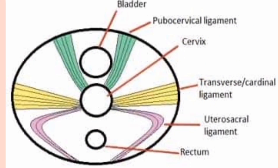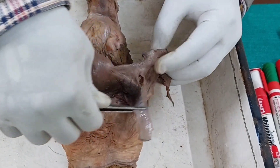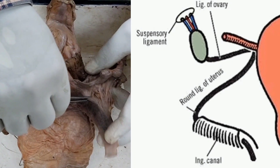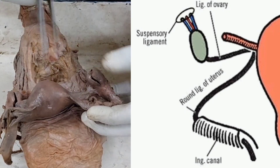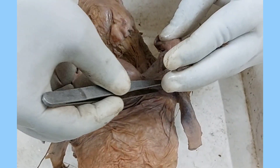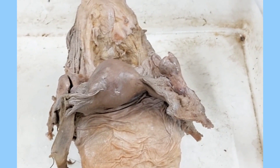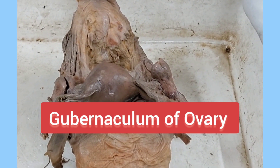The true ligaments are formed by condensation of the pelvic fascia along with some connective tissue and smooth muscle fibers. Anteriorly and inferiorly to the attachment of the uterine tube is the round ligament, and posteriorly at the uterine angle is the ligament of the ovary. Both the round ligament and the ligament of ovary are developmental remnants of the gubernaculum of the ovary, forming fibromuscular bands as true ligaments.